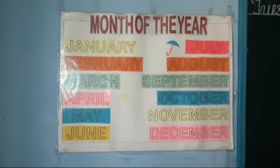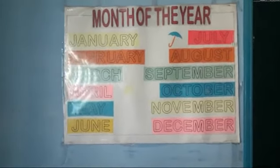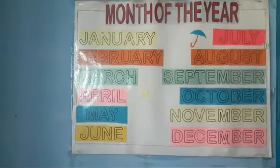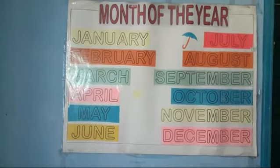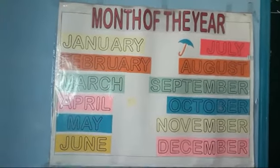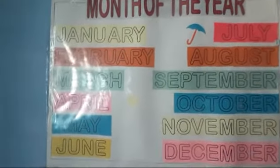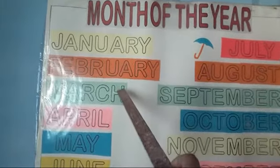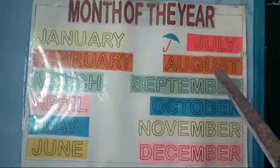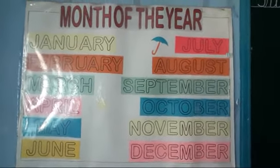How many months are there in a year? 12 months. Which month is the first month of the year? January. Yes, and the last is December. Very good. And which month has the fewest days? February. Very good. Now repeat again, speak with me children: January, February, March, April, May, June, July, August, September, October, November, and December.